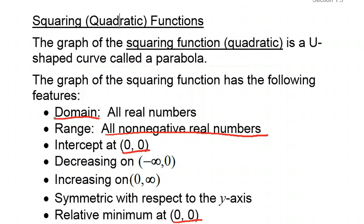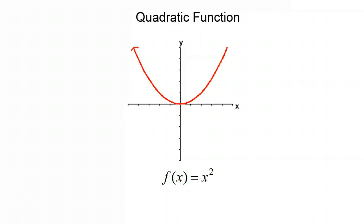The intercept will be the origin. It's going to be decreasing, and then it will be increasing. There's always symmetry, and the relative minimum is at (0, 0). So let's take a look at what that looks like. Here's the basic quadratic function. Now, we know that this parabola could be shifted around, turned upside down, stretched, and all those things. And we're going to look at that in the next week or two. But this is just the basic quadratic function, f(x) equals x squared.